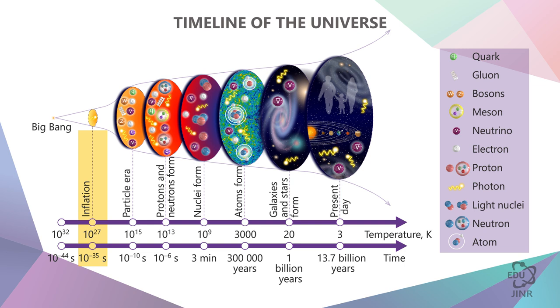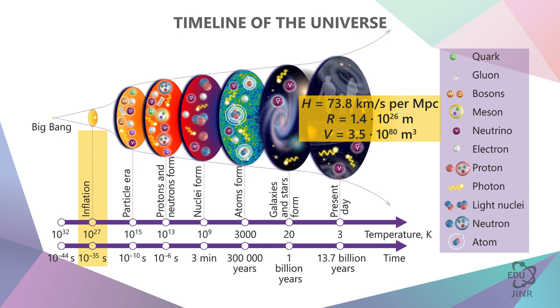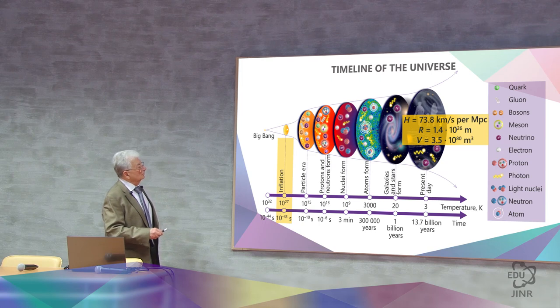We cannot imagine what the forces are that make the Universe move with acceleration. So we say that it is some kind of dark energy, which we do not yet understand, which makes the Universe expand at a speed of around 73.8 kilometers per second, at a speed of about 200 Machs per second. But this is completely incomparable with the expansion that took place at the time of inflation.